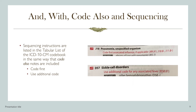The second sequencing instruction is use additional code, which lists conditions that should be coded after the identified code. For example, there is a use additional code note under D57, sickle cell disorders, instructing the coder to use an additional code for any associated fever. If the patient had both a sickle cell disorder under category D57 and an associated fever, the fever would be coded in addition, resulting in D57 for the sickle cell disorder followed by R50.81 for the fever.